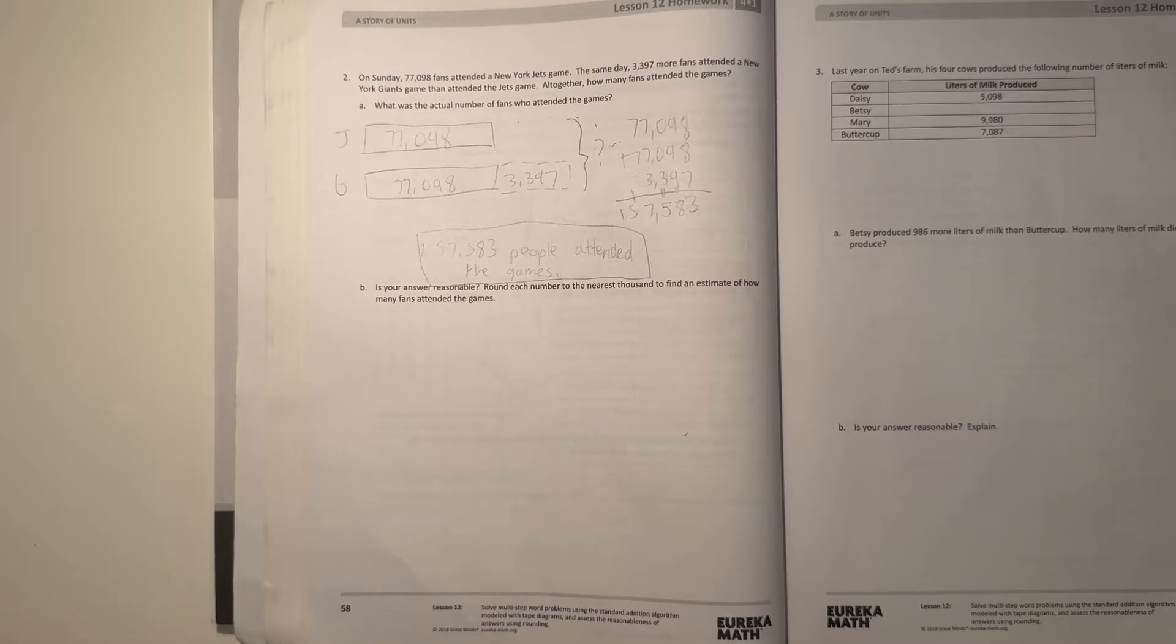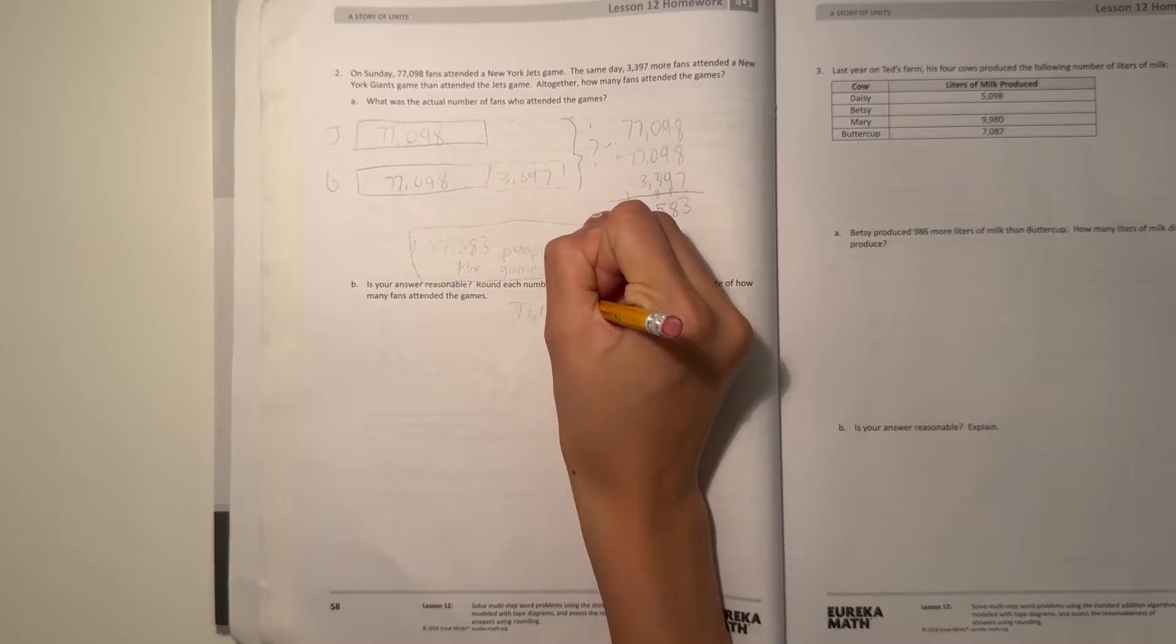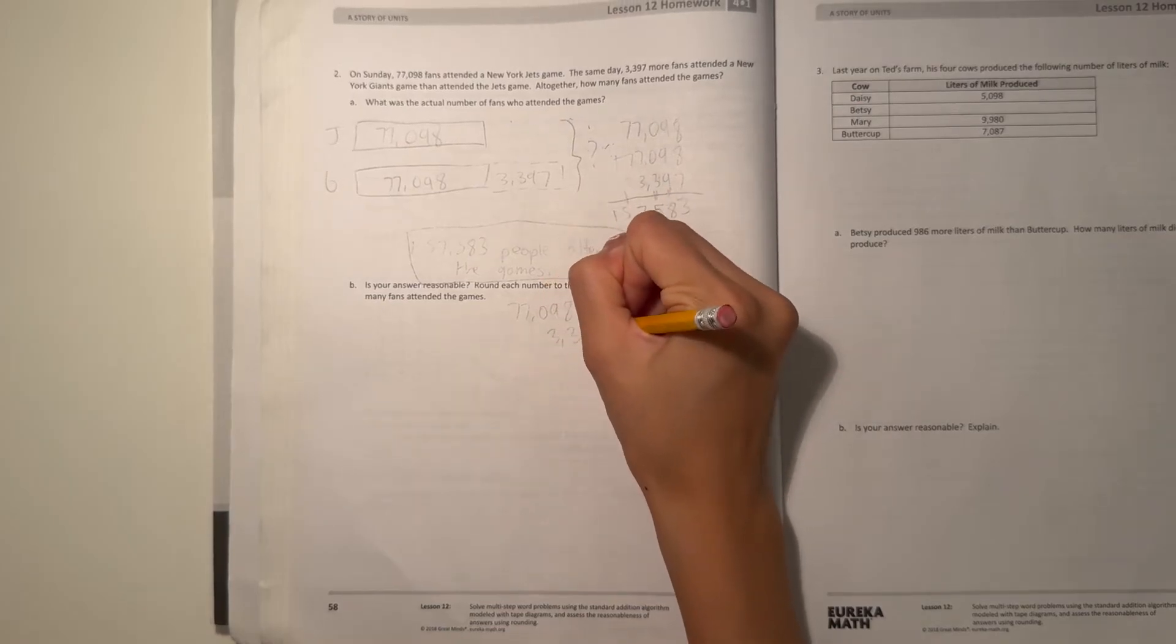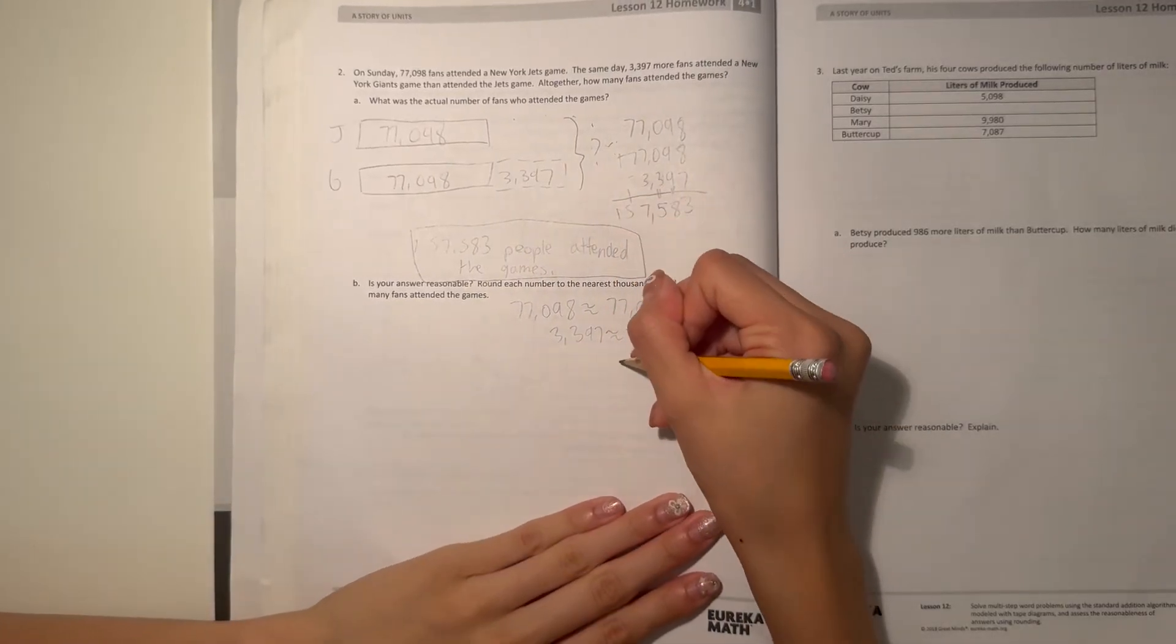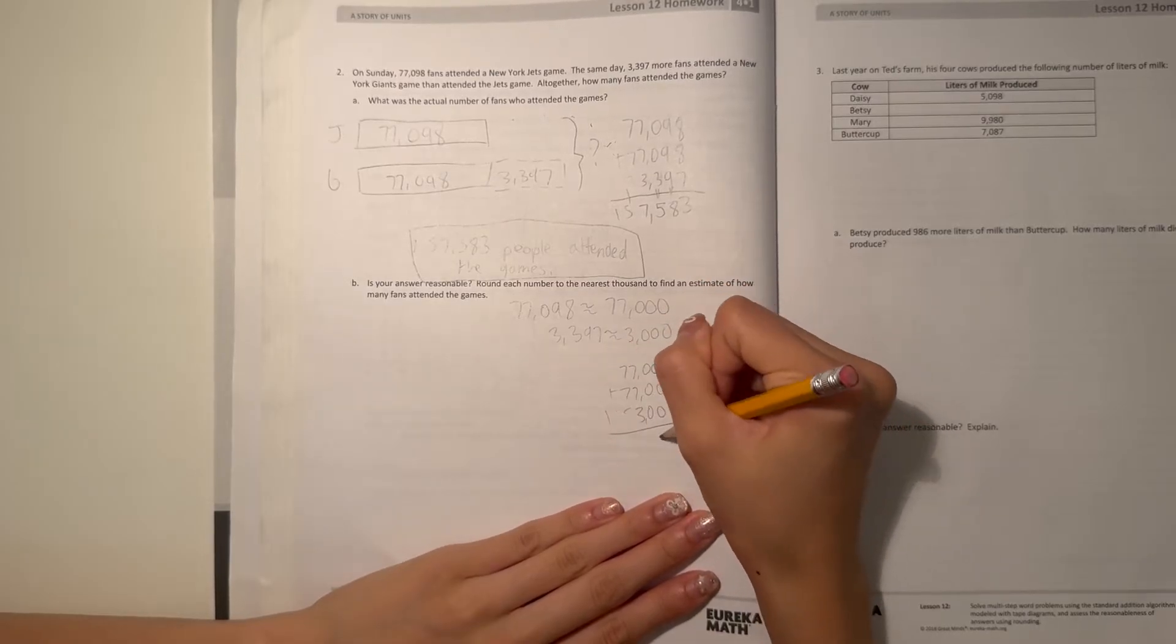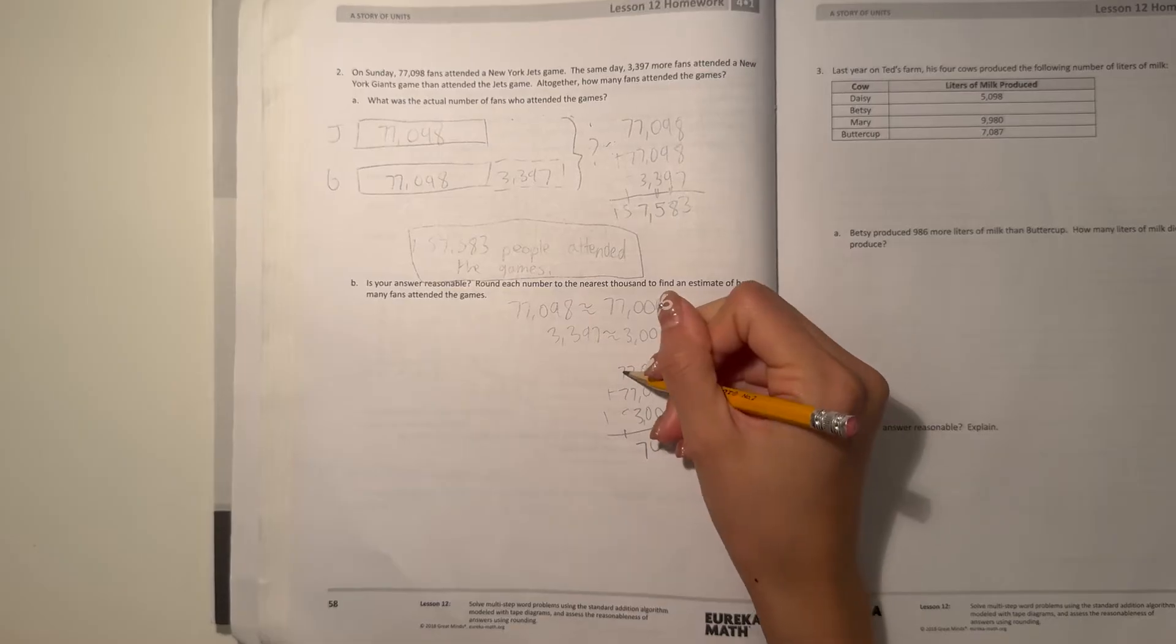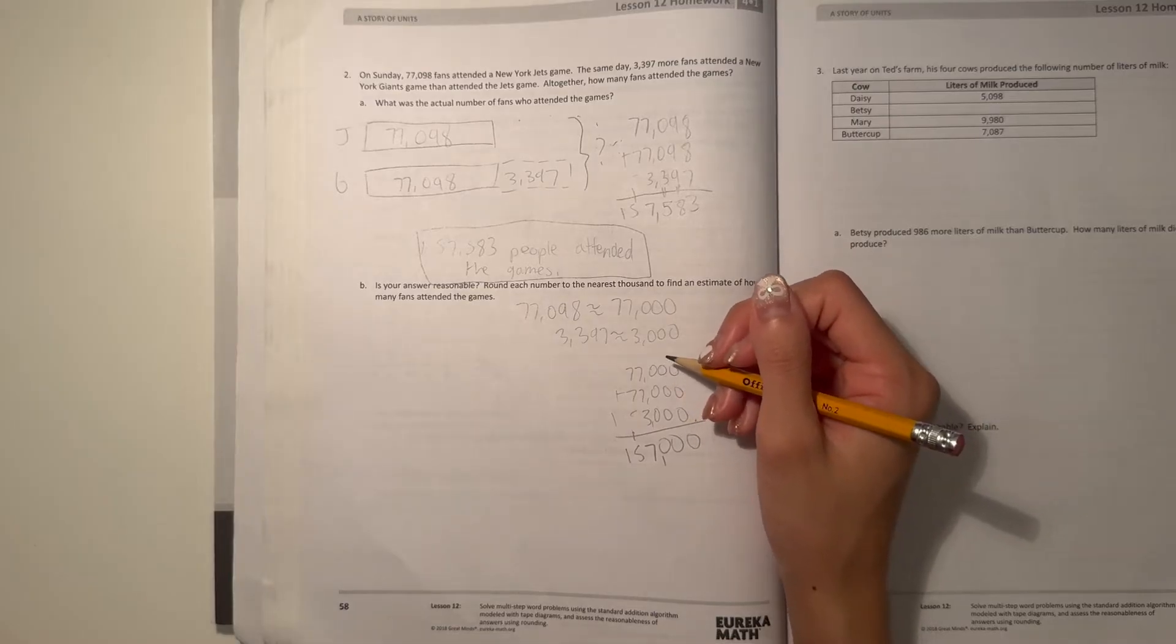Part B: is your answer reasonable? Round each number to the nearest thousand to find an estimate of how many fans attend the games. 77,098 to the nearest thousand would be 77,000. And then 3,397 to the nearest thousand would be 3,000. 77,000 plus 77,000 plus 3,000. 7 plus 7 is 14 plus 3 is 17. 7 plus 7 is 14 plus 1 is 15. So our answer is 157,000.